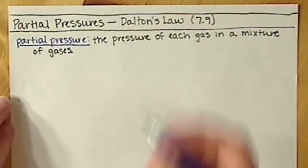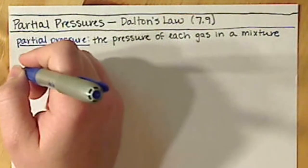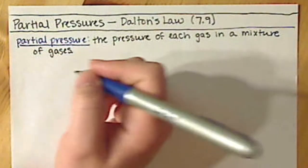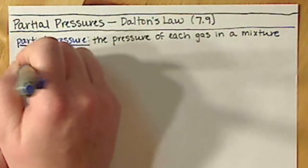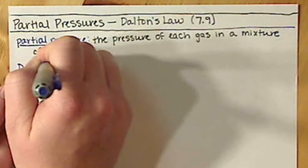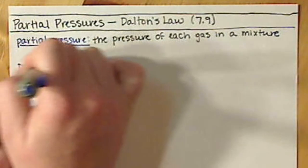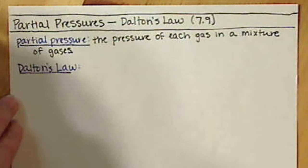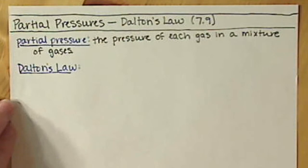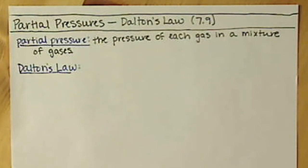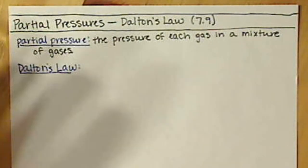Dalton's Law takes into account all of the partial pressures of a gas. The great thing about Dalton's Law is it's really simple. He basically says that the total pressure of a mixture of gases is just the sum of all of the partial pressures — so just addition.